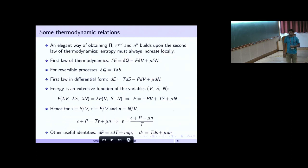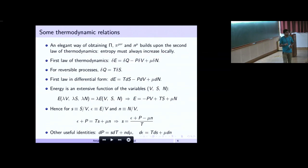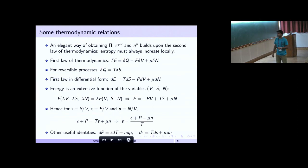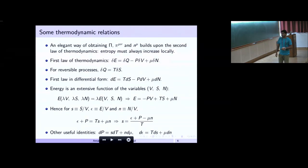How do we determine the dissipative quantities — the bulk viscous pressure, shear stress tensor, and dissipative charge current? One appeals to the second law of thermodynamics: the local four-divergence of entropy density should always be positive. We use the first law of thermodynamics; since energy is an extensive function of volume, total entropy, and total number, we can obtain an expression for total energy in terms of pressure, volume, temperature, chemical potential, and entropy, and represent these in terms of densities.